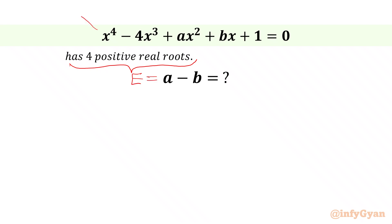Let us assume the roots of the quartic equation are alpha, beta, gamma, and delta. Now we are going to use Vieta's method to write four equations.